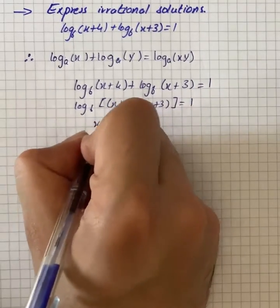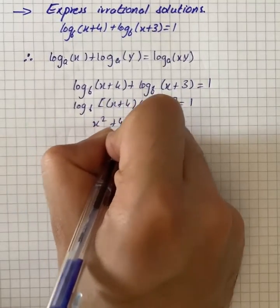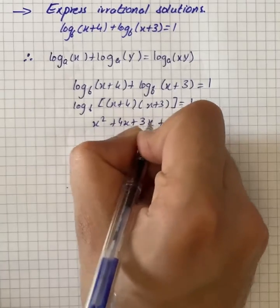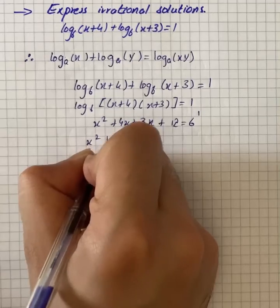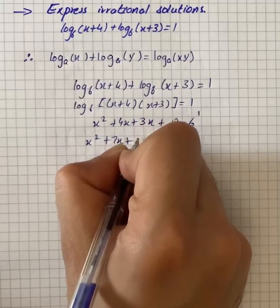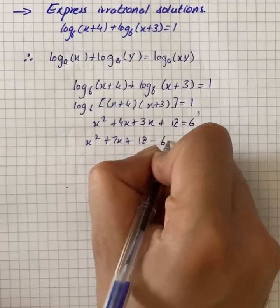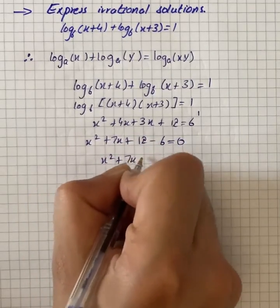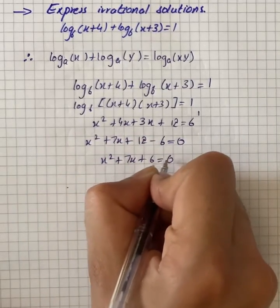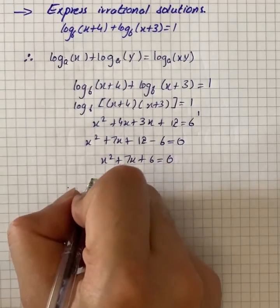Then we have x² + 4x + 3x + 12 is equal to 6 raised to power 1. Then we have x² + 7x + 12 = 6, which becomes x² + 7x + 6 = 0.